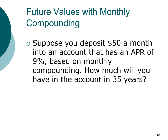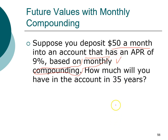Let's look at an example. You are going to deposit $50 a month into your account at an APR of 9% based on monthly compounding. How much will you have in the account in 35 years? The payment occurs monthly and compounding is also monthly — so we confirm the compounding frequency and payment frequency match, and this is an annuity.